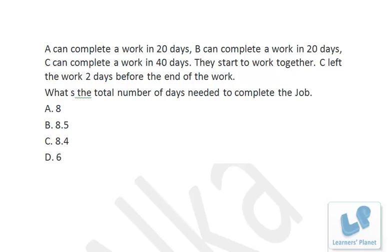A is doing 5% per day, B is doing 5% per day, and C is doing 2.5% per day — that means 12.5% of the work is being done per day when all three work together, which is 1/8 of the work per day.